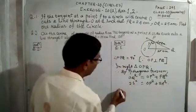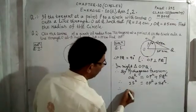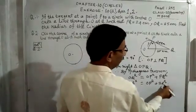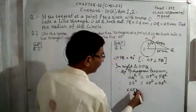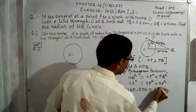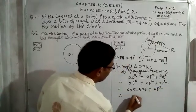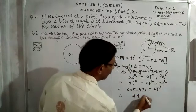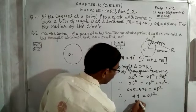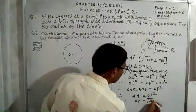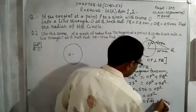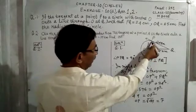25 squared is 625 and 24 squared is 576. Bringing 576 to the left-hand side: 625 minus 576 equals OP². That gives 49 equals OP². Therefore OP equals the square root of 49, which is 7. And OP is the radius of the circle.